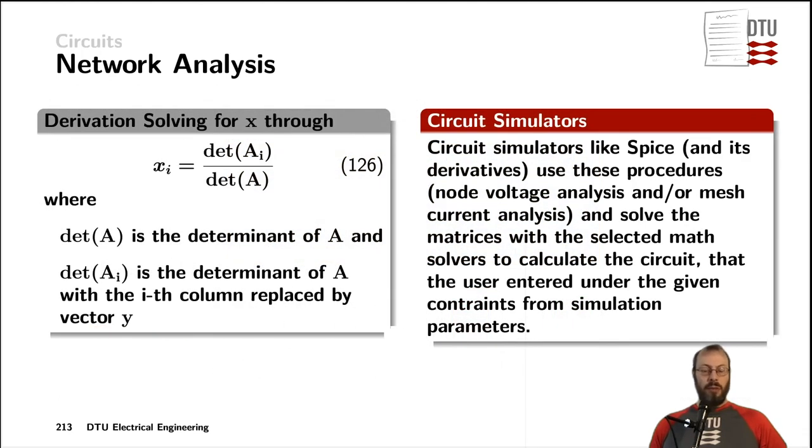To determine each of the unknowns Xi on the i-th position in the vector, you use the determinant of the matrix Ai and divide it by the determinant of the matrix A. That was all the impedances or the admittances that we had in the matrix on the previous slide. Now Ai is a bit special here. In the Ai matrix, you replace the i-th column in the matrix with the vector given from the sources—either the current sources or the voltage sources—and insert that instead of the impedances or admittances in the A matrix.